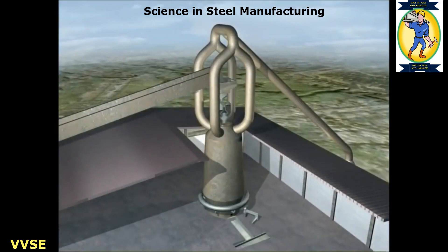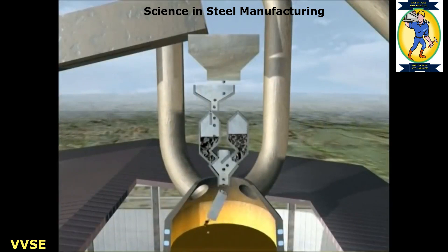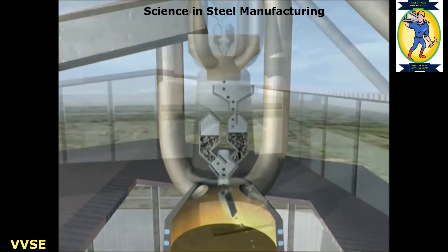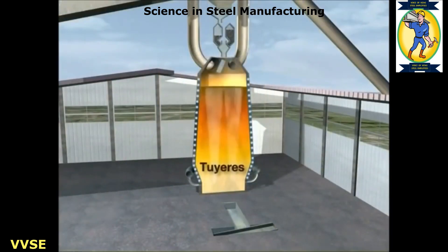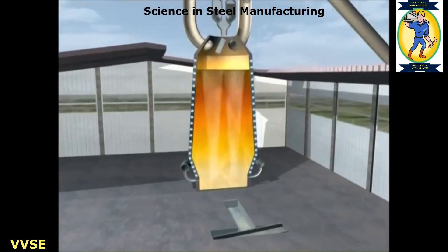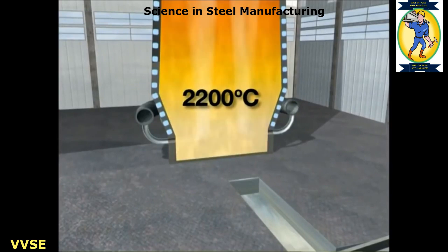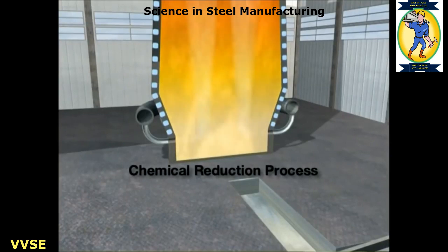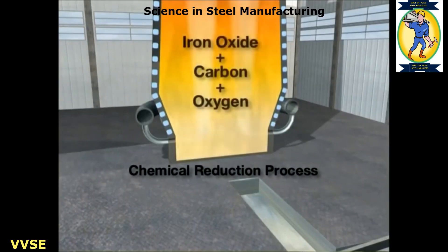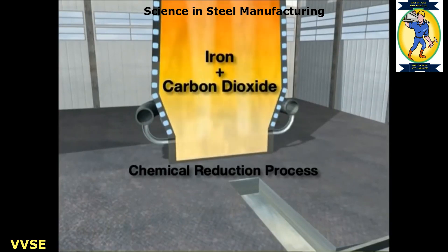These raw materials — sinter, iron ore and coke — meet each other at the blast furnace, where they are fed into the top of the furnace along with some limestone. A hot air blast, from which the furnace gets its name, is injected through nozzles called tweers in the base of the furnace. This blast raises the temperature in the furnace to white-hot intensity, around 2,200 degrees centigrade. This very high temperature is needed for the chemical reduction and melting of the sinter and iron ore to form a pool of molten iron in the lower part of the furnace, just above the hearth.